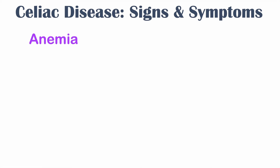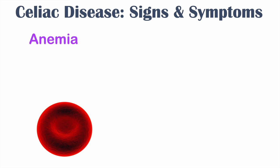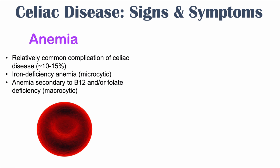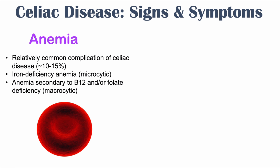Anemia is a relatively common complication of celiac disease, affecting roughly 10% to 15% of patients. It can be iron deficiency anemia causing microcytic anemia, where red blood cells are smaller, or anemia secondary to B12 and/or folate deficiency causing macrocytic anemia where red blood cells are larger. A mixture of both types can also occur.